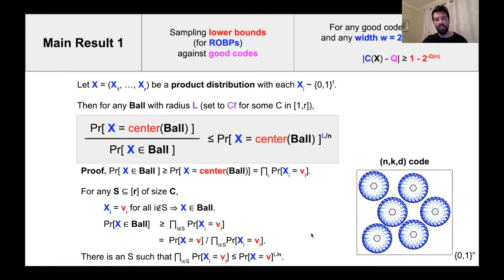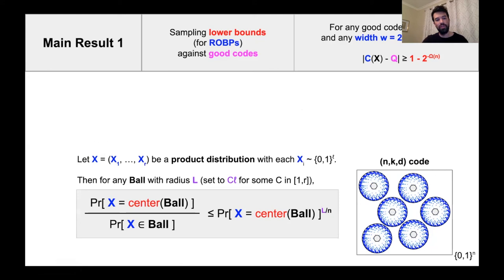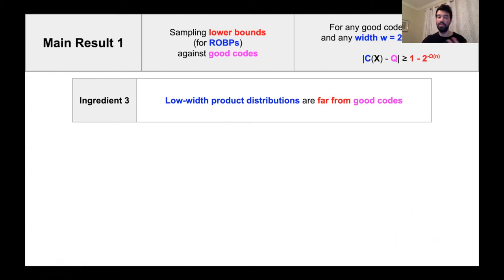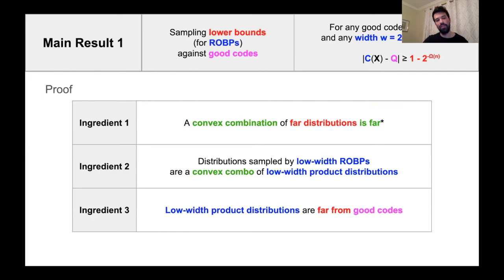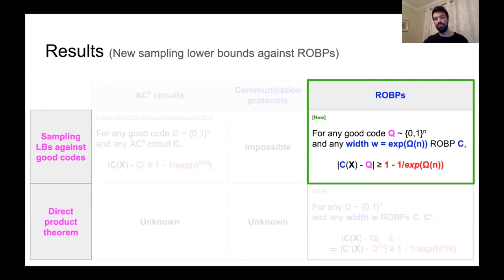That completes the proof of our key idea, and we've already seen how it can be used to obtain ingredient three. Since ingredient three was the last ingredient that went into our first main result, we've finished the proof of our sampling lower bounds for ROBPs against good codes.